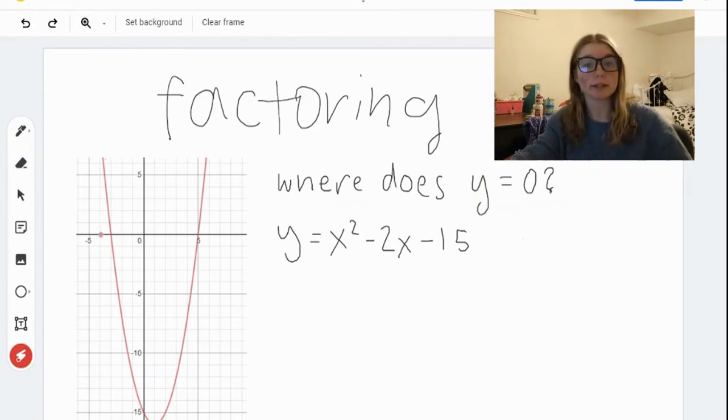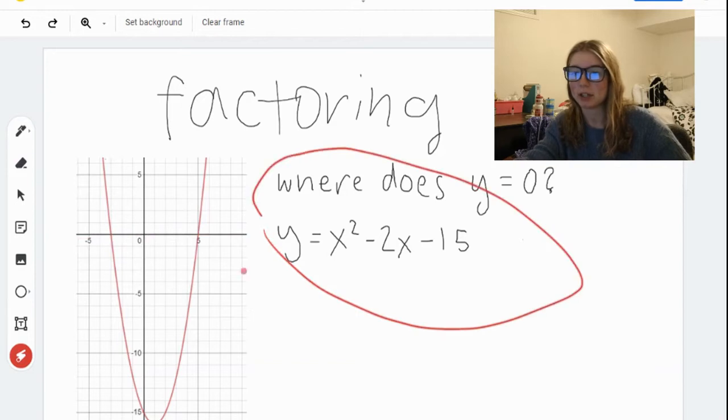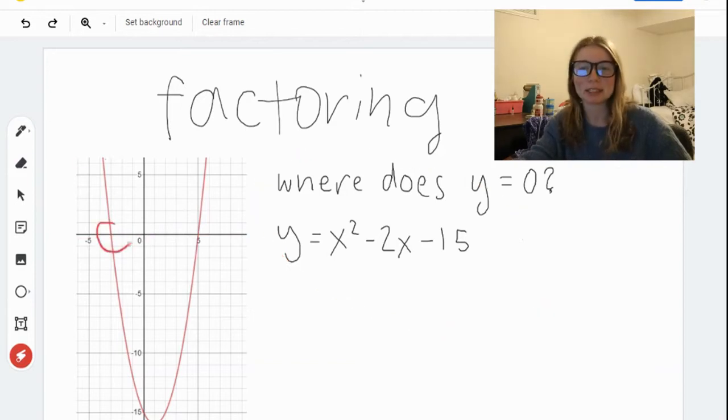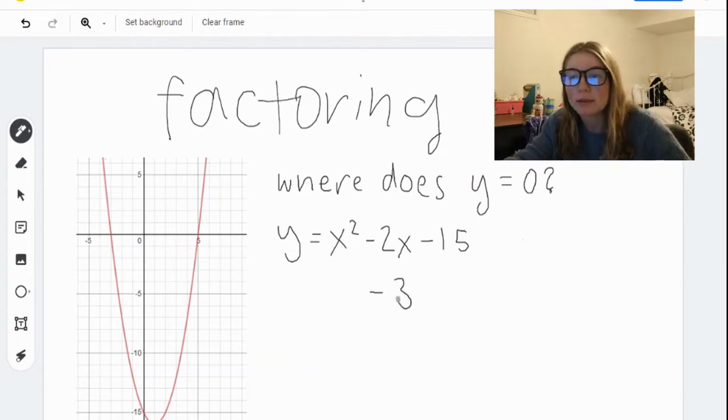Since we've got the graph in front of us, we can see that y equals 0 along the x axis, and within this function, y equals 0 at this point and at this point. So that's going to be at negative 3, when x equals negative 3, and when x equals 5.